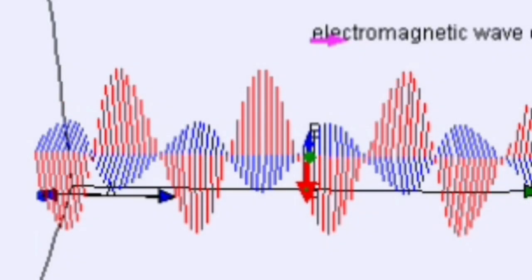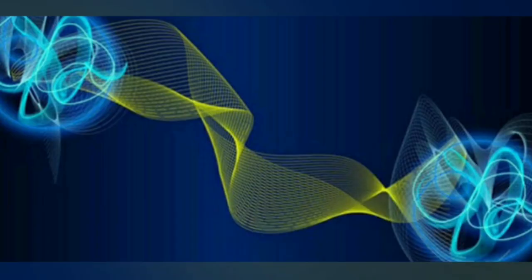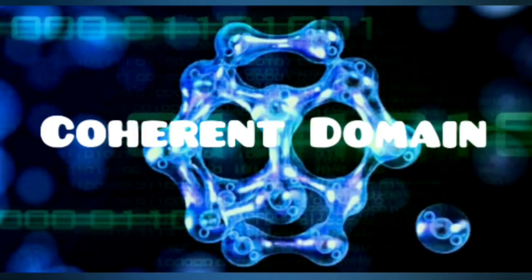However, anything electromagnetic can get in. All these signals can be trapped inside that space and that's what we call a coherent domain.